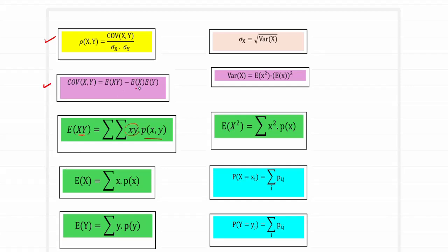The next term E of X is obtained by summation of x into probability of x, which represents the mean of the random variable x. Since only one random variable x is involved, just one summation is used. p of x is the marginal probability function of x. Similarly, E of Y is obtained using summation y into p of y — the marginal probability function p of y. These four quantities take care of the numerator part.